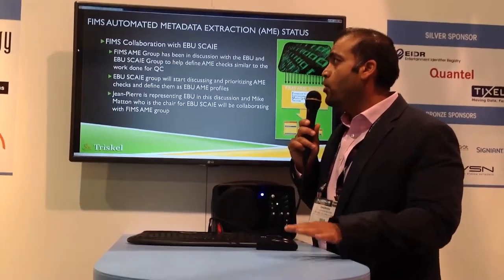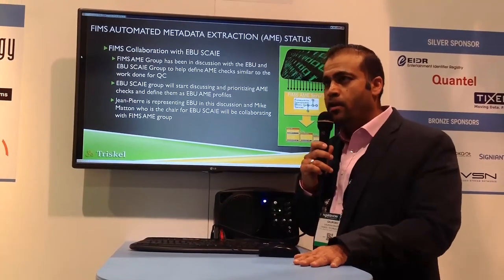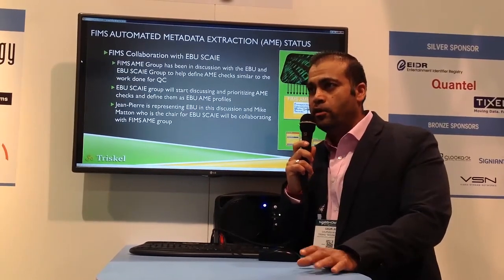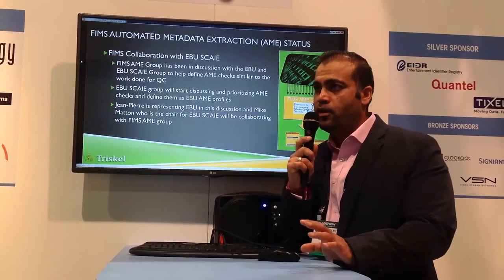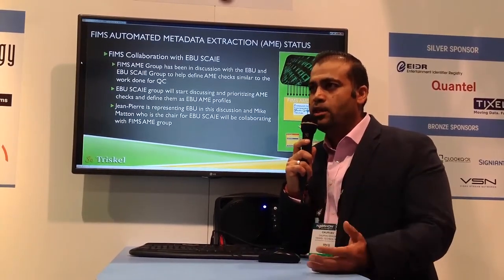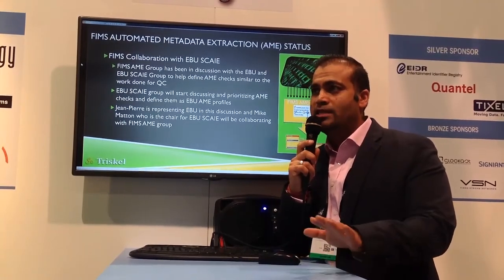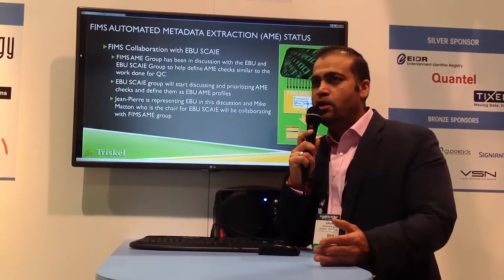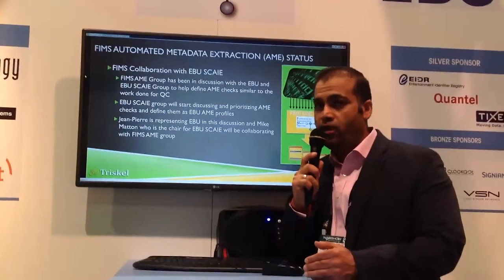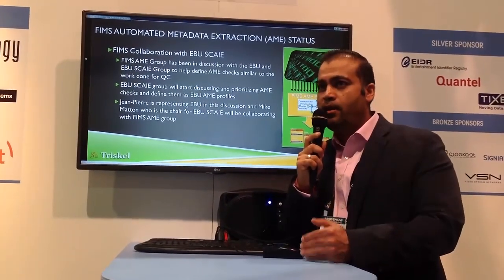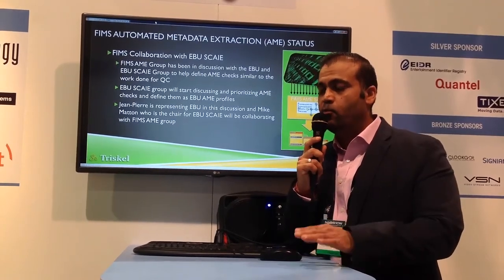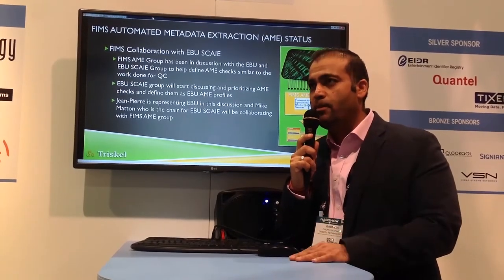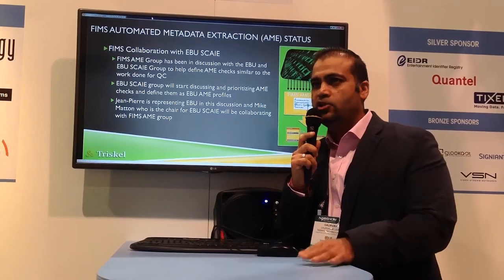Continuing the status: we are also working with the EBU Sky Group. What the QA group did was leverage the EBU QC parts created by the EBU to give a standard set of guidelines for what is QC — noise level, black frames, et cetera. A set of cards were created so that when a vendor implements it, they have something to refer to as far as what kind of validation they're going to be doing and what kind of information they should return. That same kind of effort will be done for AME as well. The Sky Group is going to leverage the work done by the FIMS group to define what the cards are going to be for AME — face detection, scene detection, et cetera.